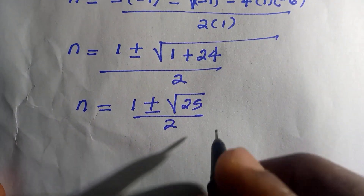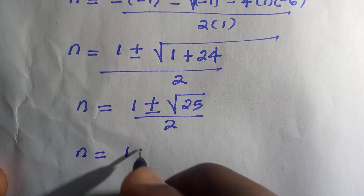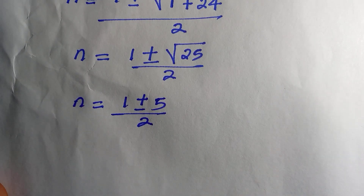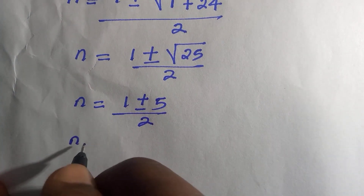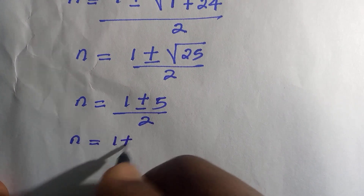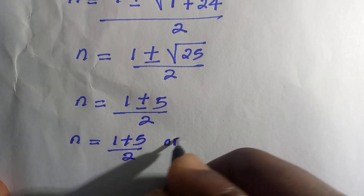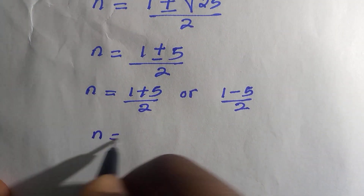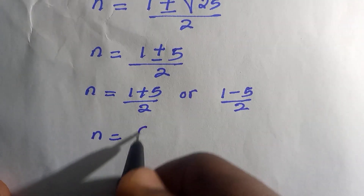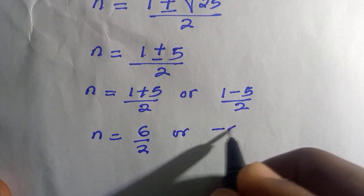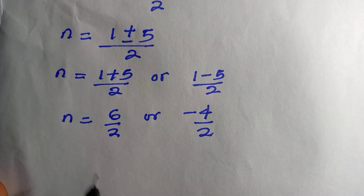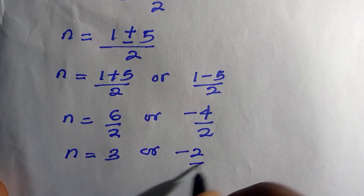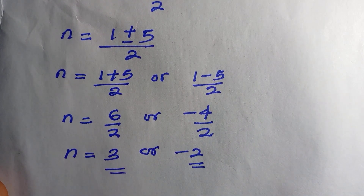The next step is taking the square root of twenty-five, which is five. So we have n equals one plus or minus five, divided by two. We split into two cases: n equals one plus five divided by two, or n equals one minus five divided by two. One plus five is six divided by two gives three, or one minus five is negative four divided by two gives negative two. So the two values are n equals three and n equals negative two.